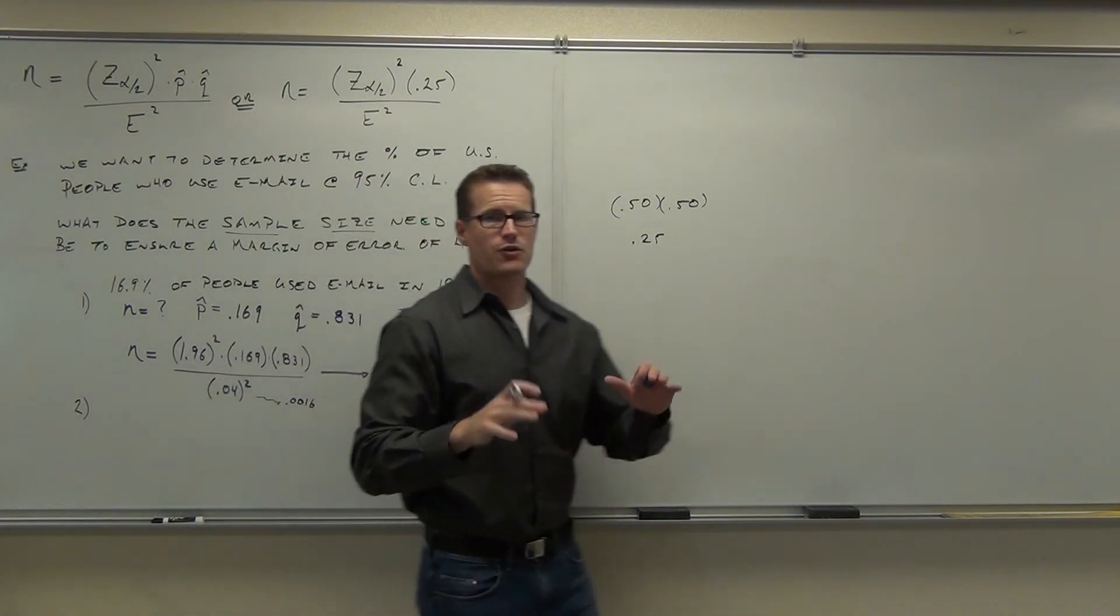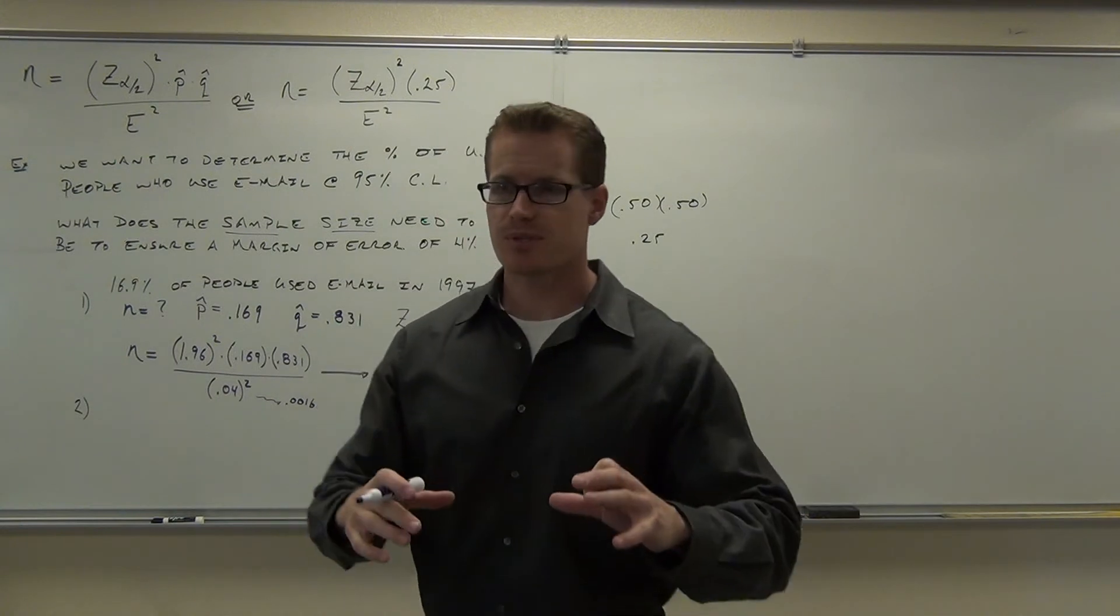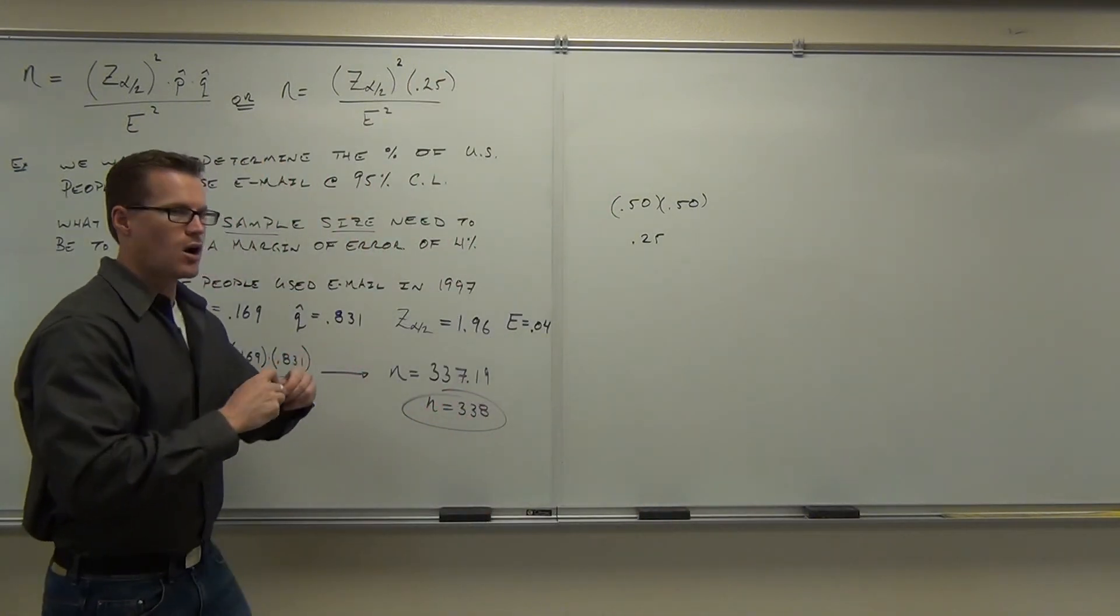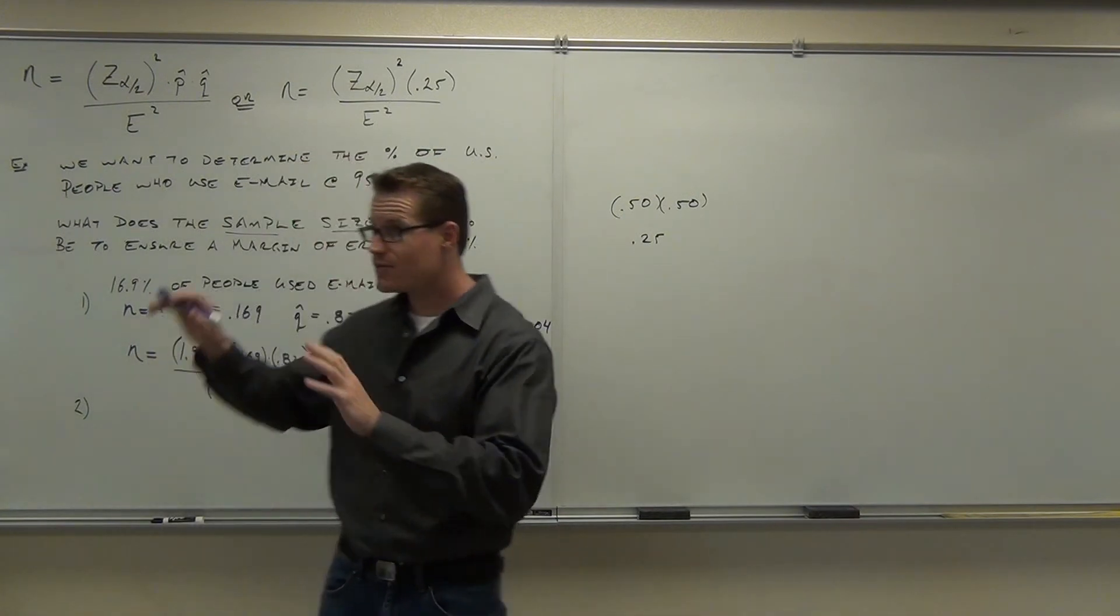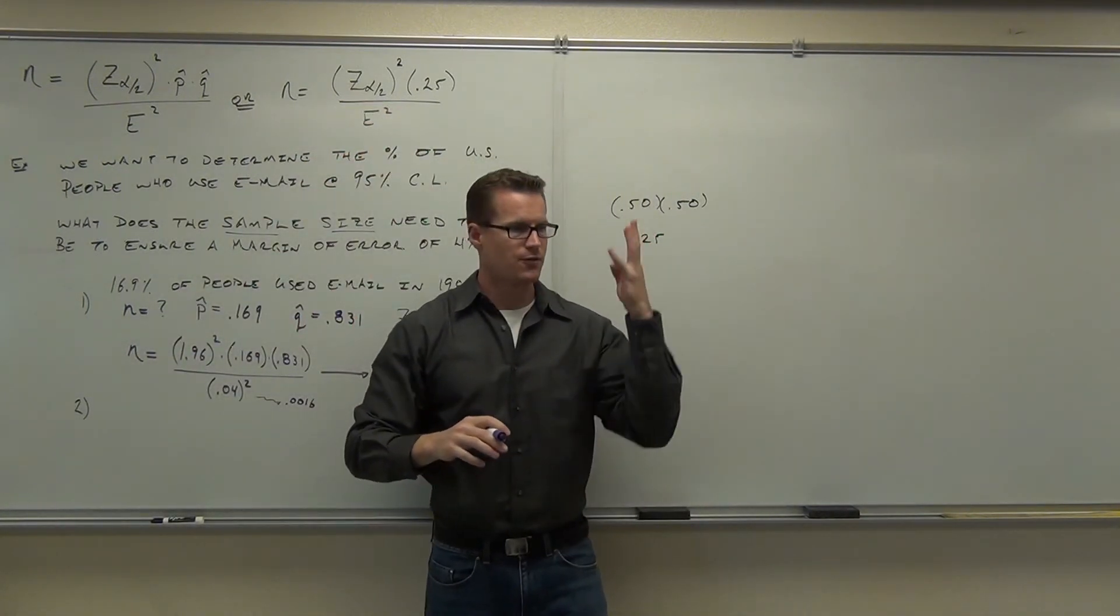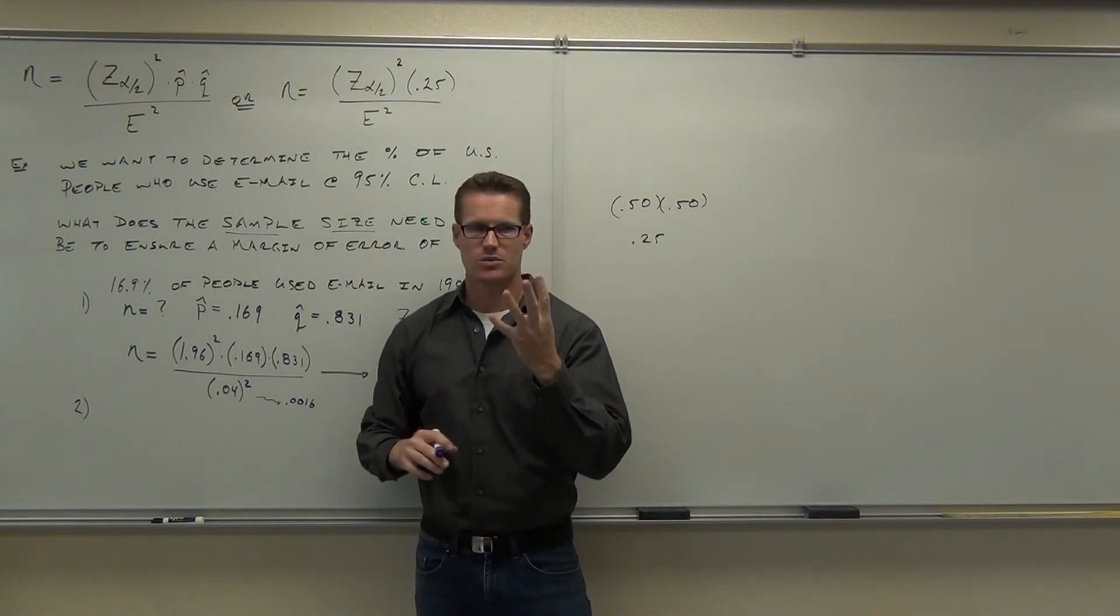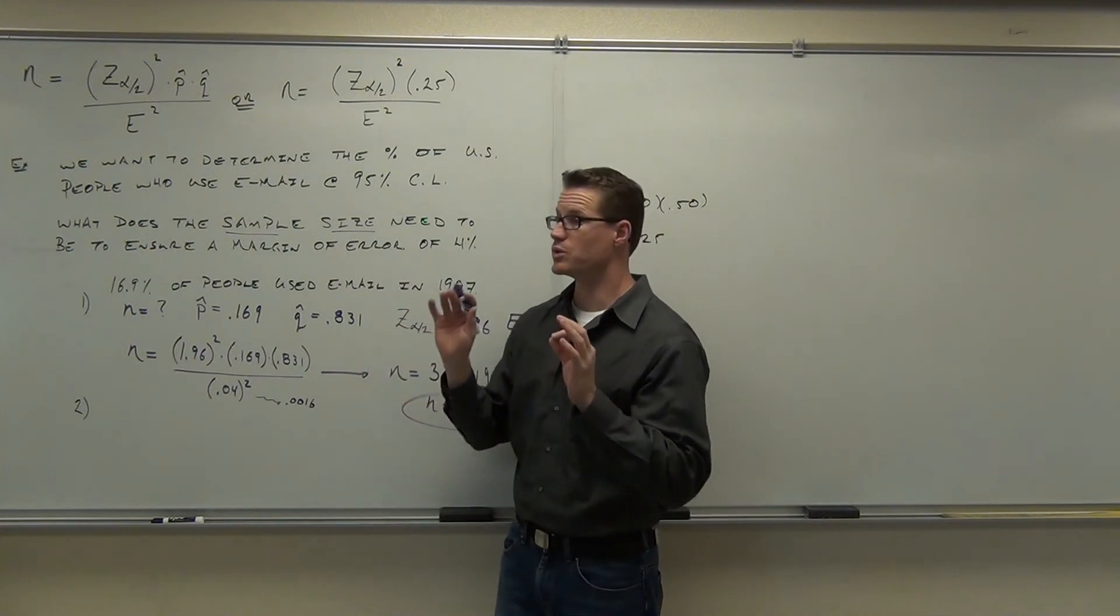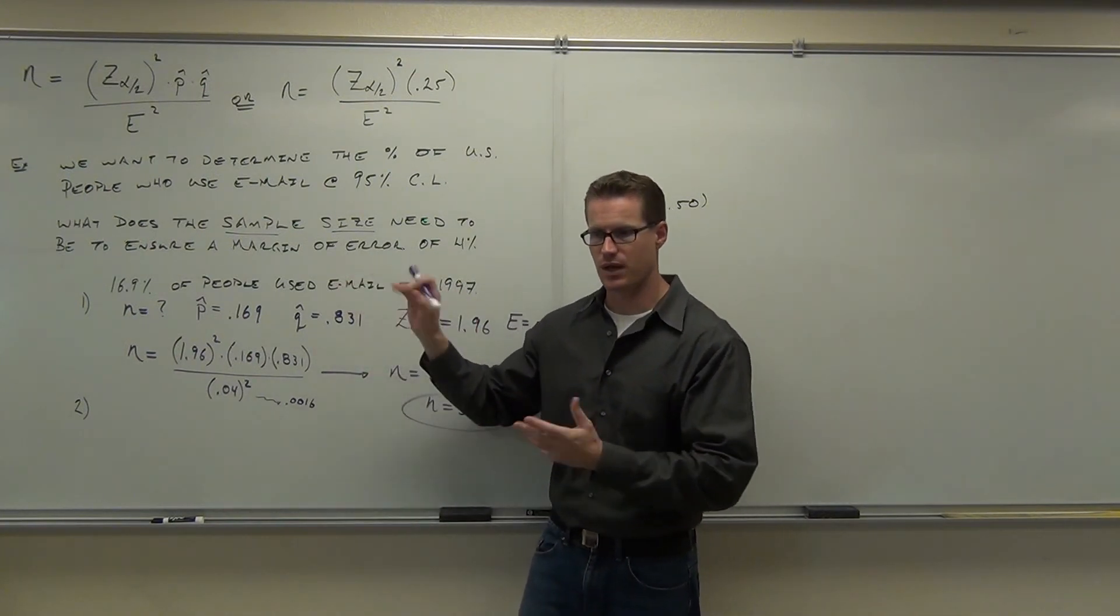What this stands for, again, for the last time, this is the sample size that you will need in this situation to have a confidence interval, a 95% confidence interval, where your margin of error is only 4%. So you haven't done the confidence interval. This is just the sample size you would need to get that margin of error that you were looking for. That's how you do this in real life.